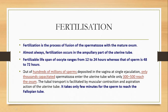During sexual intercourse, when the male ejaculates, about hundreds of millions of sperms will be deposited in the vagina at a single ejaculation. Among those, only thousands will be capacitated and enter the uterine tube, and among these thousands only 300 to 500 will reach up to the ovum. The ovum is waiting for the sperm at the ampulla of the uterine tube.